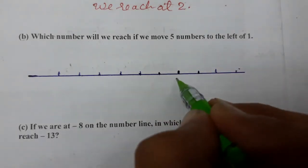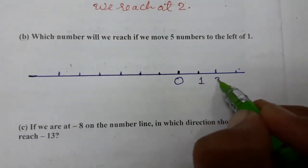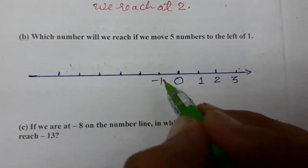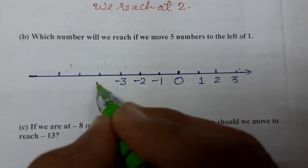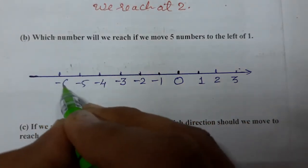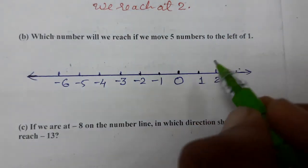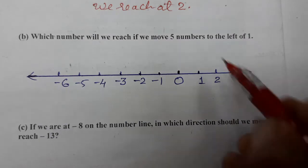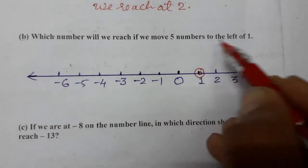We have marked the number line. This one is 0, this one is 1, this one is 2, this one is 3, and the negatives: minus 1, minus 2, minus 3, minus 4, minus 5, minus 6. Now five numbers to the left of 1 — here is 1. We move five numbers to the left.